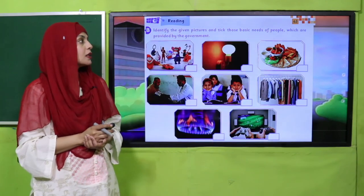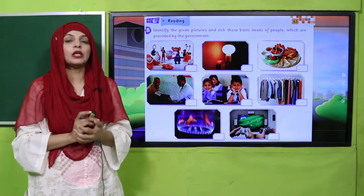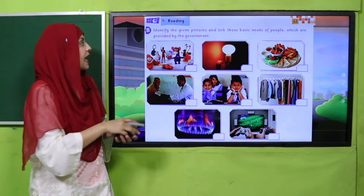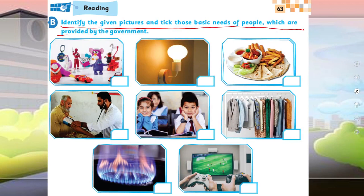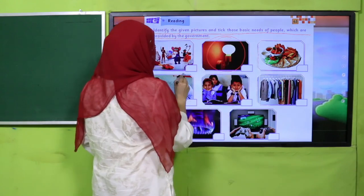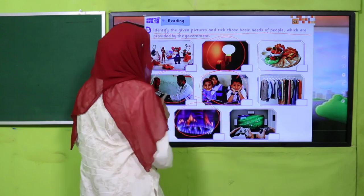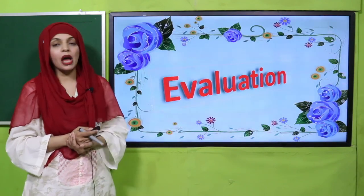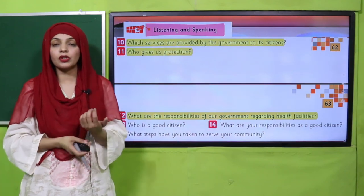Now let's move forward to the picture reading activity on page number 63 of your books. Identify the given pictures and pick out the basic needs of the people which are provided by the government. You can see a lot of pictures — toys, electricity, food, healthcare, education, clothing, gas, and video games. Identify the services that the government provides to us, such as electricity, healthcare facilities, education, and gas.